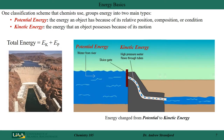One classification scheme that chemists use is to group energy into two main types: potential energy and kinetic energy. Potential energy is the energy that all objects have based on their relative position, their composition, or some state or condition they are in. A real-world example is water held back by a dam — that water has the potential for releasing or transferring energy.